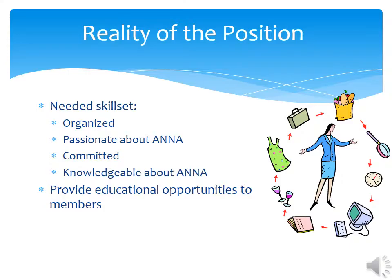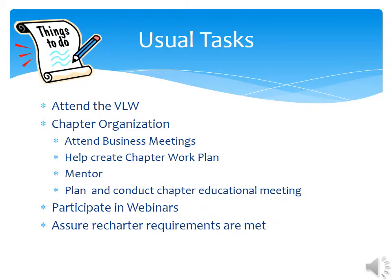Let's talk about other things you need to be successful. As a chapter officer, it helps to be organized, passionate, and committed to doing a good job. It also helps to know the vision and mission of ANNA, as well as the goals for the upcoming year. The president-elect is responsible for meeting the educational needs of the chapter members. The best place to start on your journey as a chapter president-elect is the VLW. There you will learn more about chapter business meetings, creating chapter work plans, conducting effective educational events, and organizational skills. You can also learn how to be a mentor and find the perfect mentor for yourself.